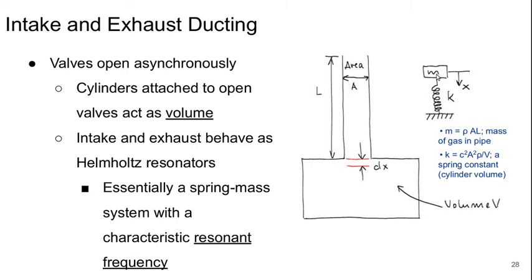A Helmholtz resonator is basically a spring-mass system that has a characteristic resonant frequency. There's a certain frequency at which this system wants to vibrate, and fluid mechanically you get the same thing when you have a pipe sitting on top of a volume — the volume acts like the spring and the slug of fluid in the pipe acts as the mass that bounces up and down on this compressible gas spring.